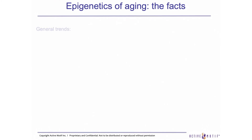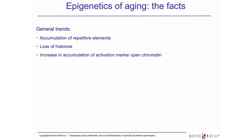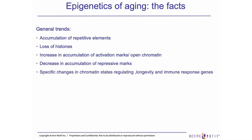What do we know in regards to aging and epigenetics? We know that during aging we have accumulation of repetitive elements, loss of histones, increase in accumulation of active marks and decrease in accumulation of repressive marks. This leads to open chromatin and specific changes in chromatin states of genes that regulate longevity and immune response, leading to chronic inflammation.